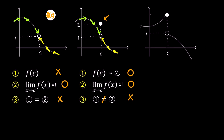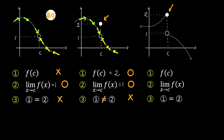In this graph, a solid circle indicates f(c) exists and has a value of 2. However, the left-hand limit approaches 2 while the right-hand limit approaches 1. Therefore the limit of f does not exist, and consequently the third condition is not satisfied — the answer remains not continuous (✗). In all three graphs, f is not continuous at c.